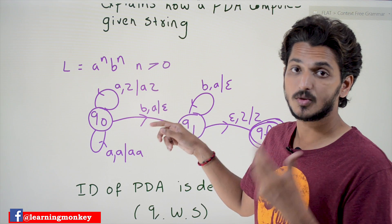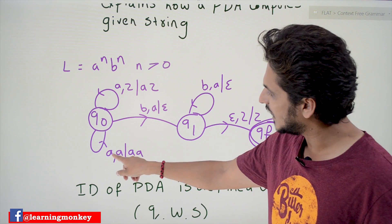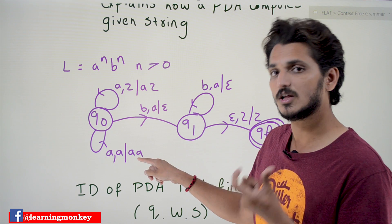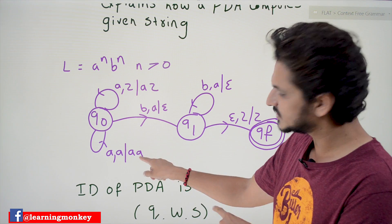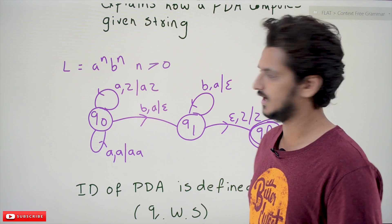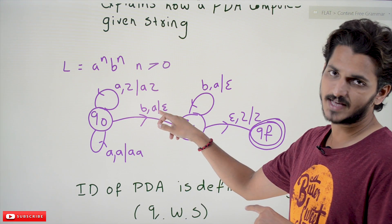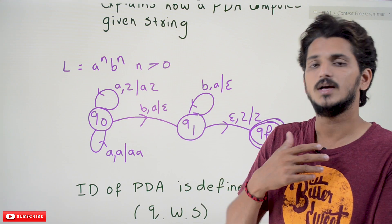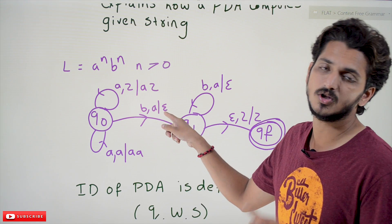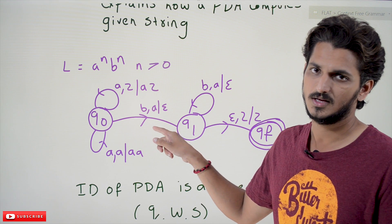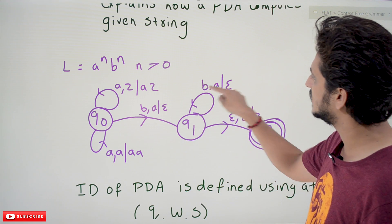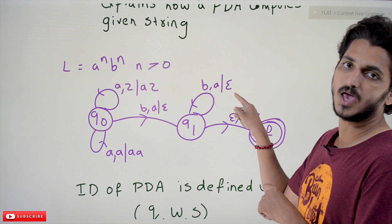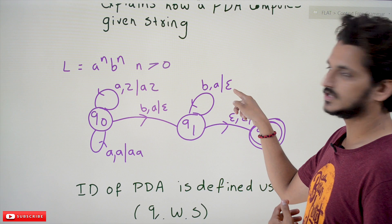Similarly, if the input symbol is 'a' and the stack symbol is 'A', we push 'A' onto the stack, leaving 'AA' as the top two elements — whenever it's shown like this, a push operation has been done. If the input symbol is 'b' and the stack symbol is 'A', epsilon (empty string) means we pop the element present on the top of the stack — that's why epsilon is shown on stack top, indicating a pop operation.